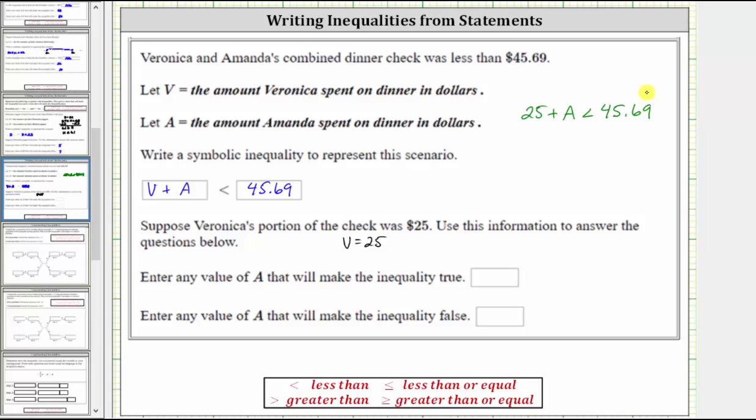Now, we could probably answer these last two questions with the inequality in this form, but let's go ahead and solve this inequality for A. Notice we have this positive 25 on the same side of the inequality as the A. To undo this positive 25, we would subtract 25 on both sides of the inequality. So let's go ahead and do that.